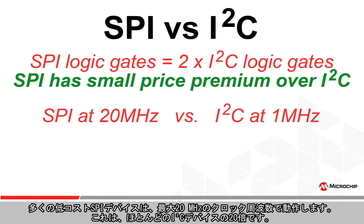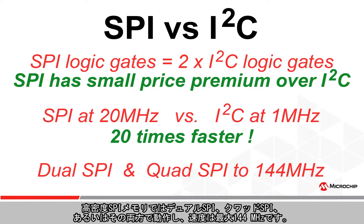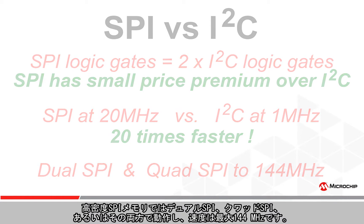Many low-cost SPI devices offer up to 20 MHz clock frequencies, which is a 20 times improvement when compared to most I2C devices. Higher-density SPI memories may even offer dual and/or quad SPI to increase the throughput speed up to 144 MHz.